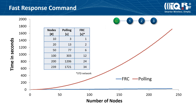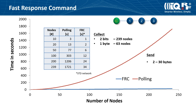For example, the FRC duration in a full network with 239 bonded and discovered nodes and default FRC response time is 34 seconds in the STD network. If you would collect data using unicast packets, it would take almost half an hour, not half a minute like if you use fast response command. Since the packet can transfer just a limited number of bytes, you can send up to 30 bytes of user data to all or selected nodes and collect 2 bits from up to 239 nodes, 1 byte from up to 63 nodes, 2 bytes from up to 31 nodes, and 4 bytes from up to 15 nodes.